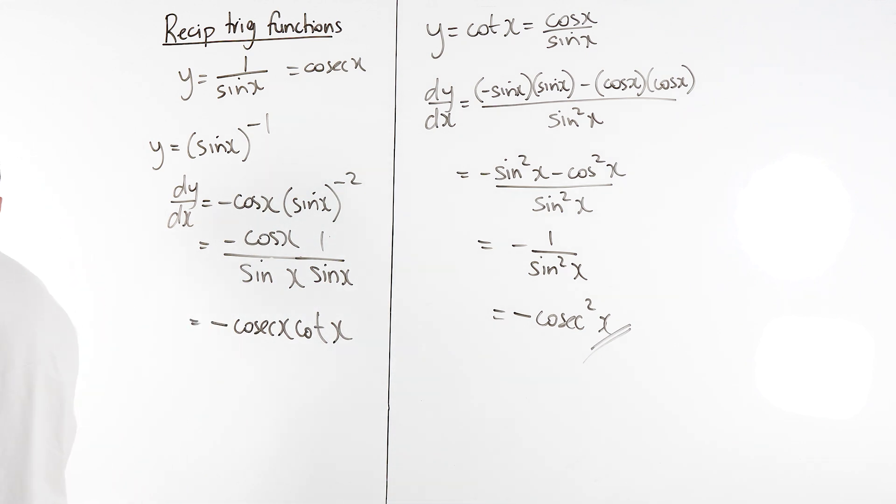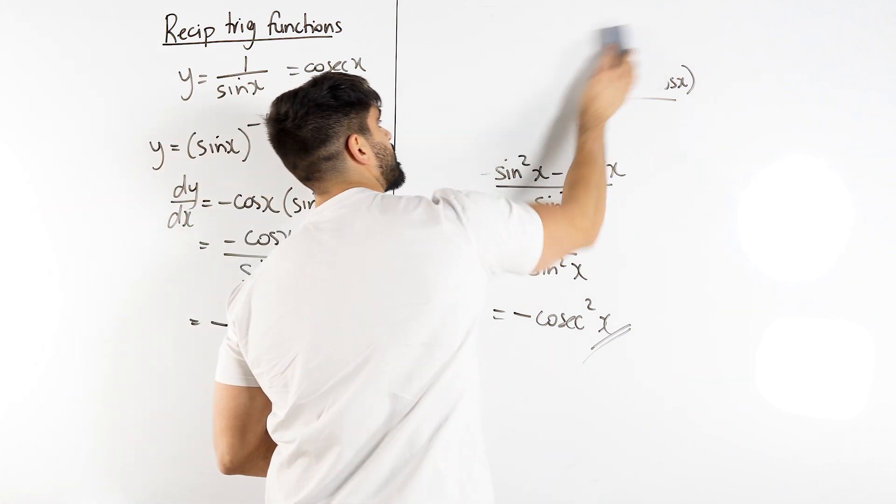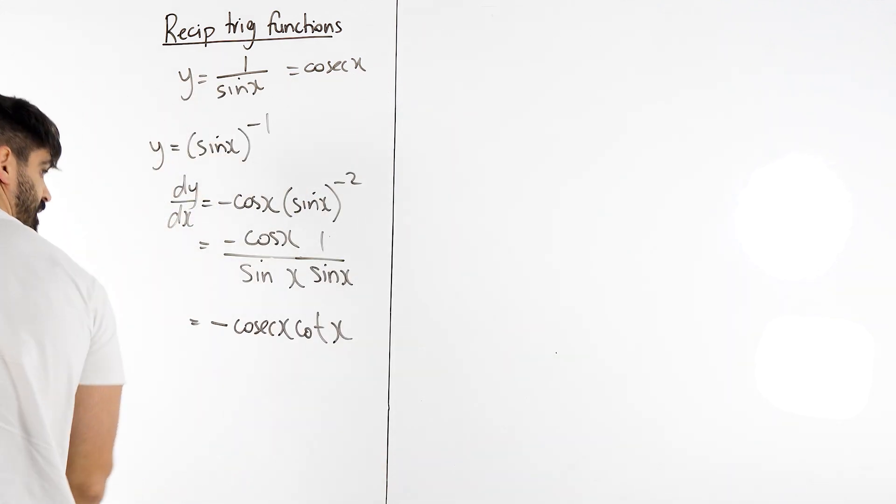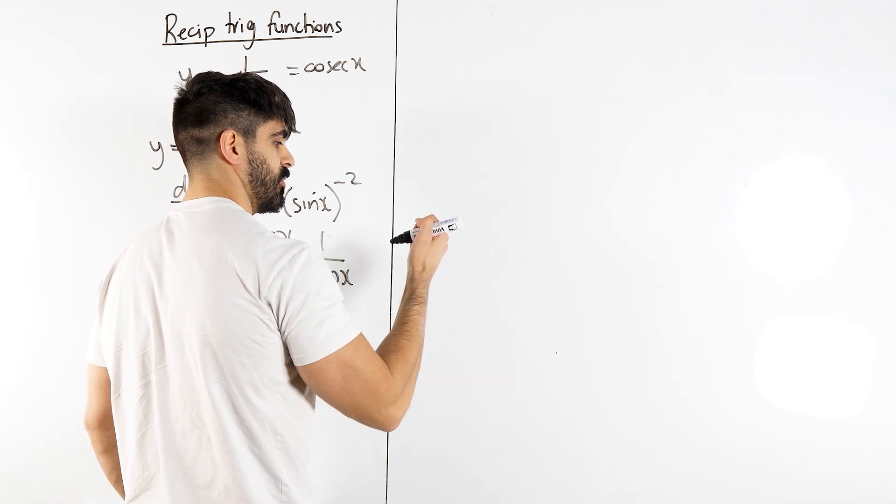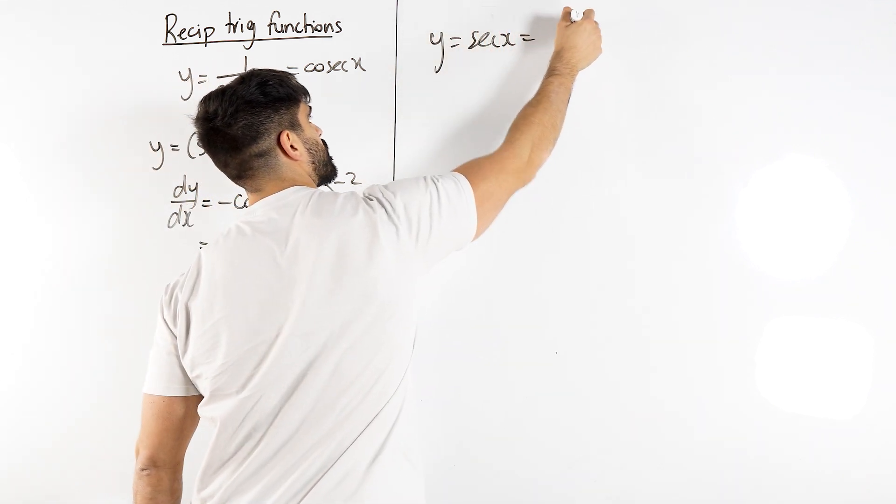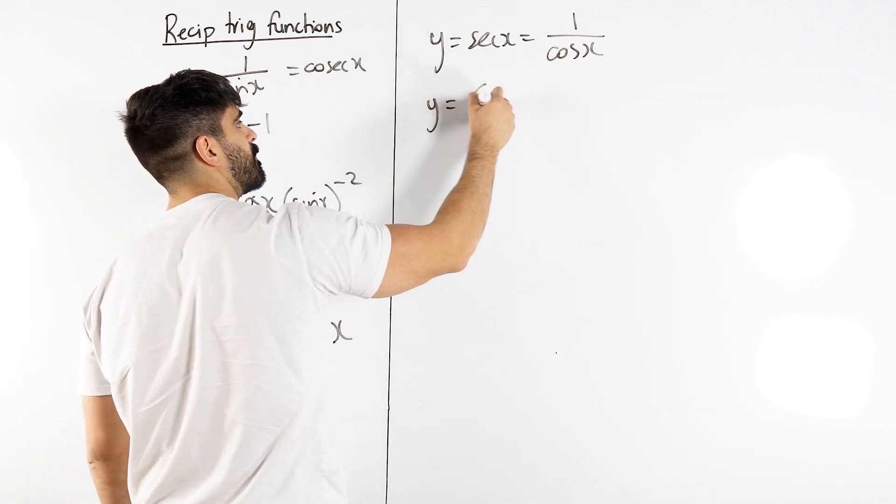Then the final one we need to differentiate is sec. I'll write down all the rules for you so we can answer some more questions. So with sec, we write that as one over cos, they're very simple proofs right?